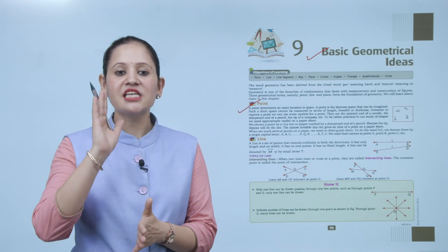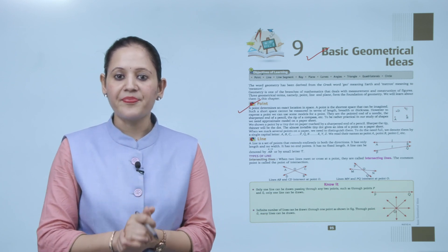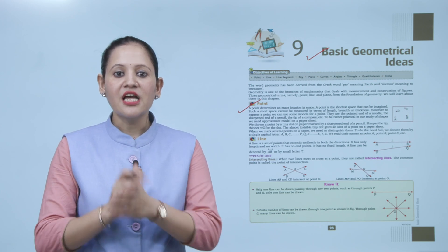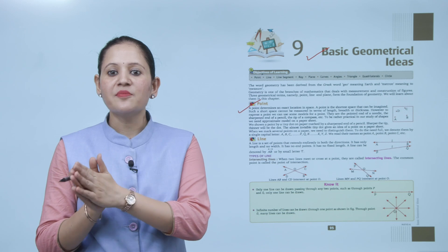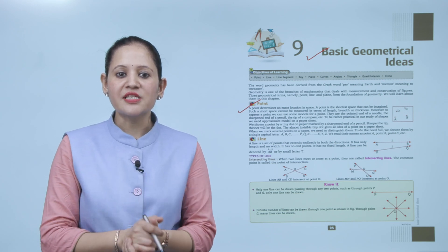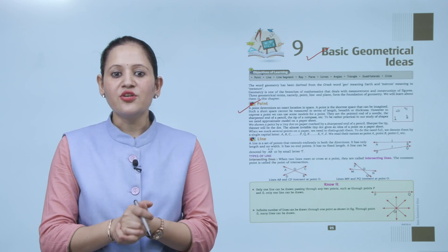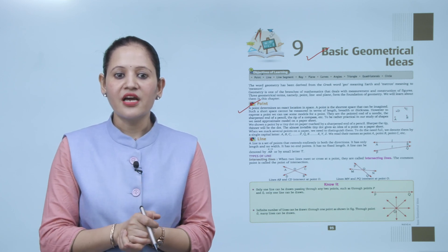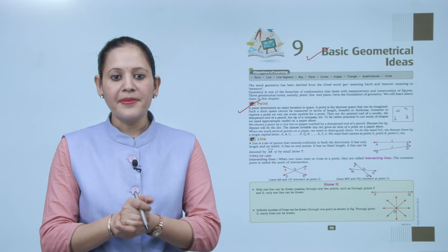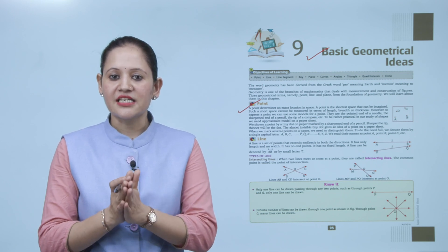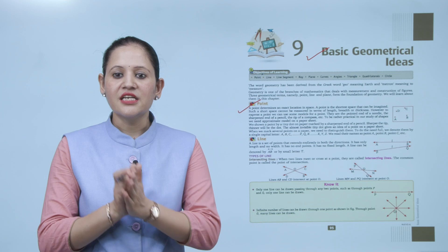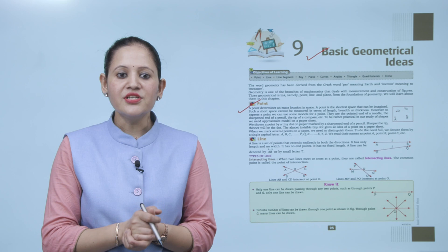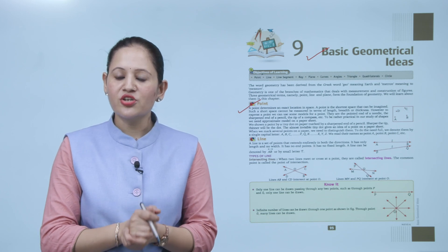Three geometrical terms — point, line, and plane — form the foundation of geometry. First is point. A point determines the exact location in space. A point is the shortest space that can be imagined — it cannot be measured in terms of length, breadth, or thickness. To express a point, we use models such as the sharp end of a needle, a sharpened pencil, or the tip of a compass.